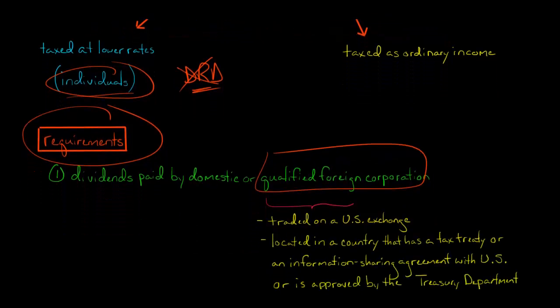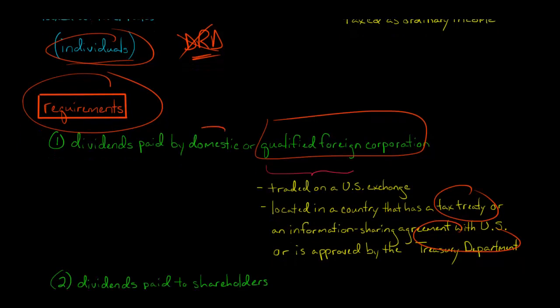It's a foreign corporation that is traded on a U.S. exchange, or if it's not traded on a U.S. exchange, it's located in a country that has a tax treaty with the U.S., or it has an information sharing agreement with the U.S., or it's been approved by the U.S. Treasury Department. So it doesn't have to be a domestic corporation, but if it's a foreign corporation, it has to meet one of these requirements.